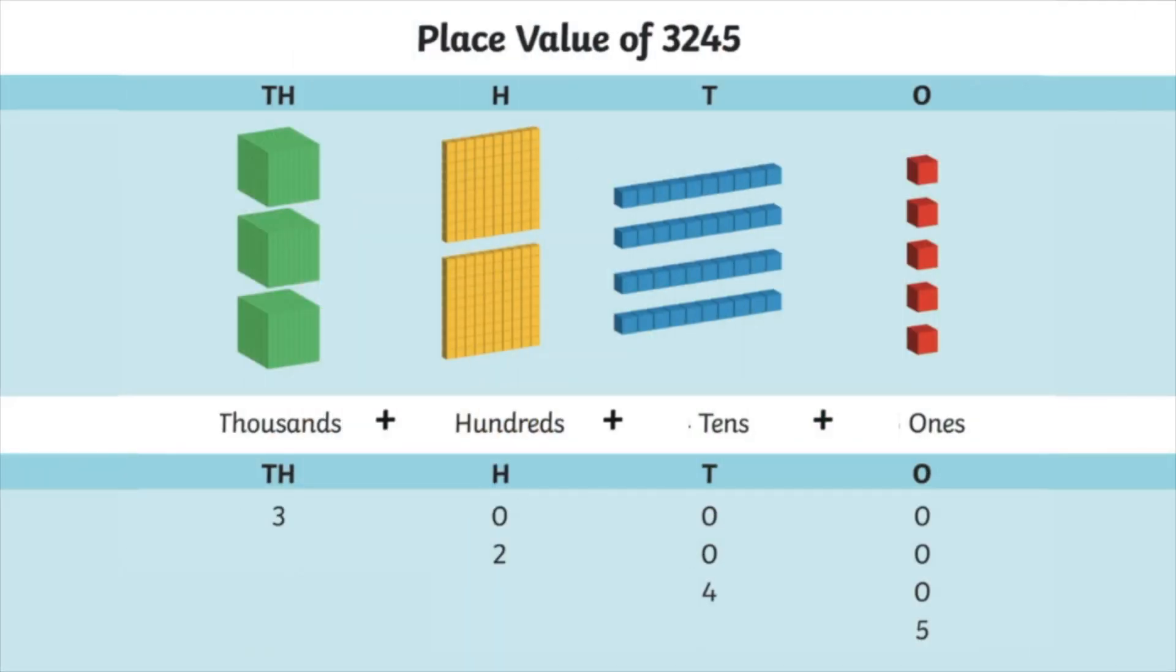For example, for a place value of 3,245, there are 3 thousands, 2 hundreds, 4 tens, and 5 ones.